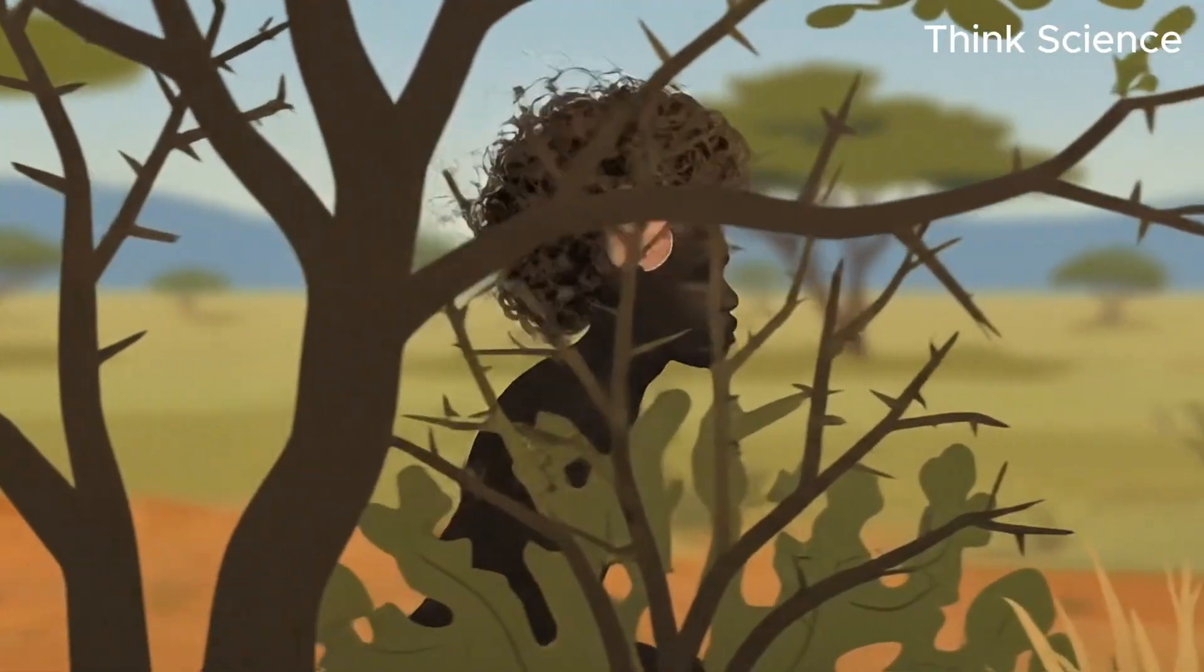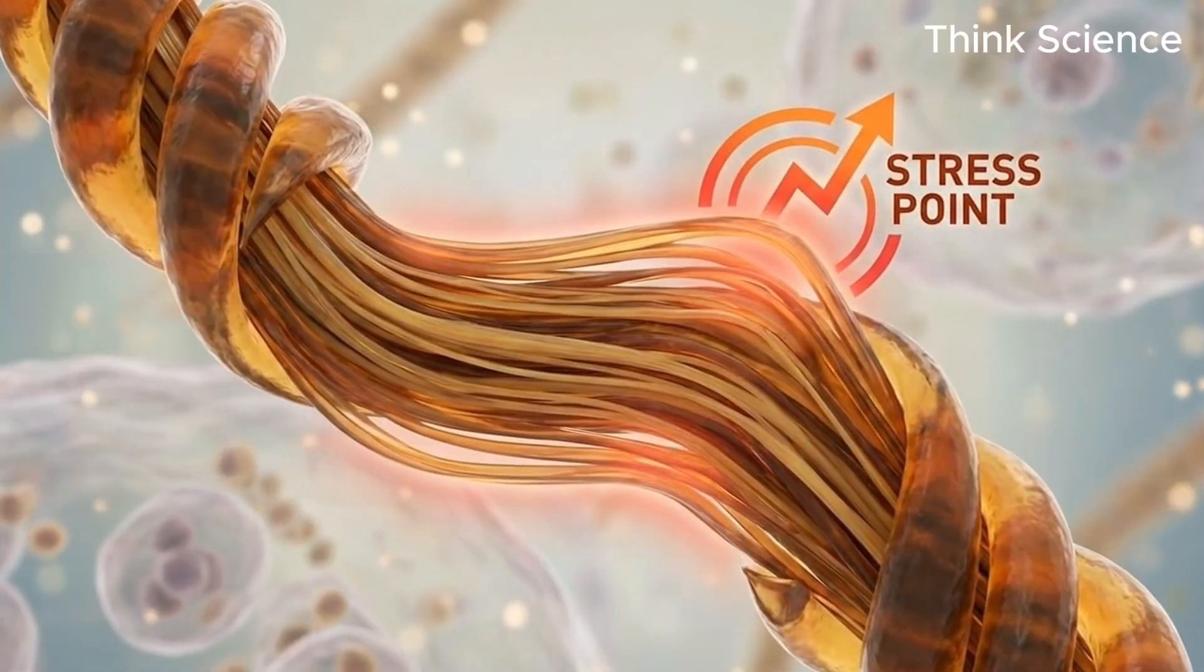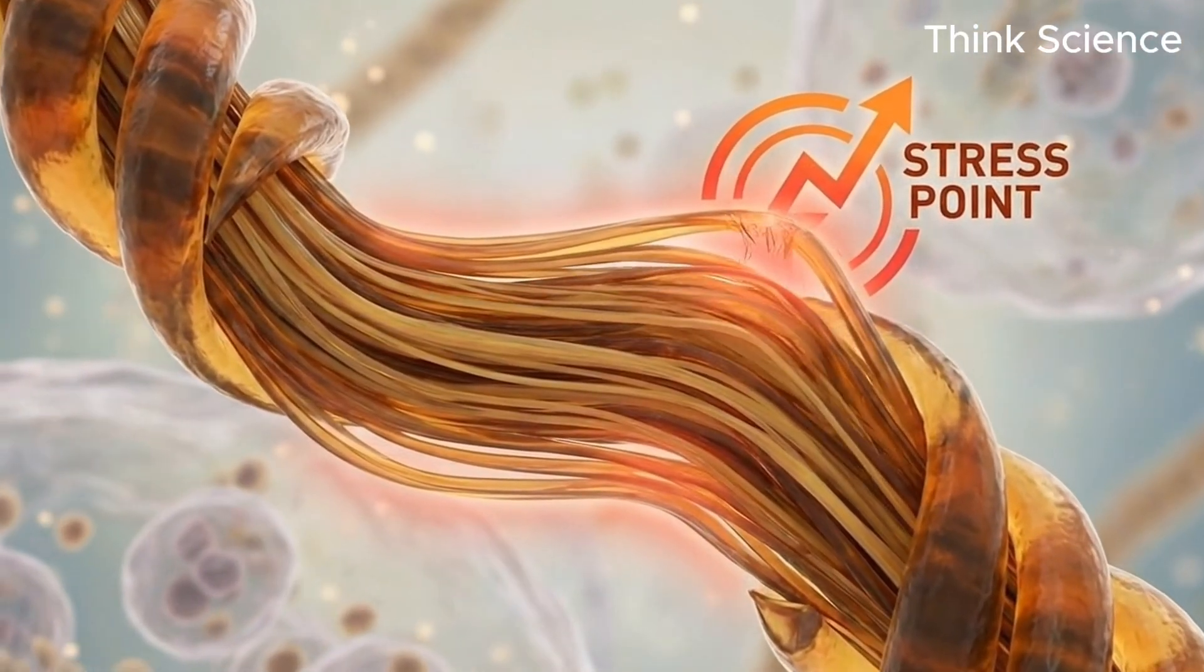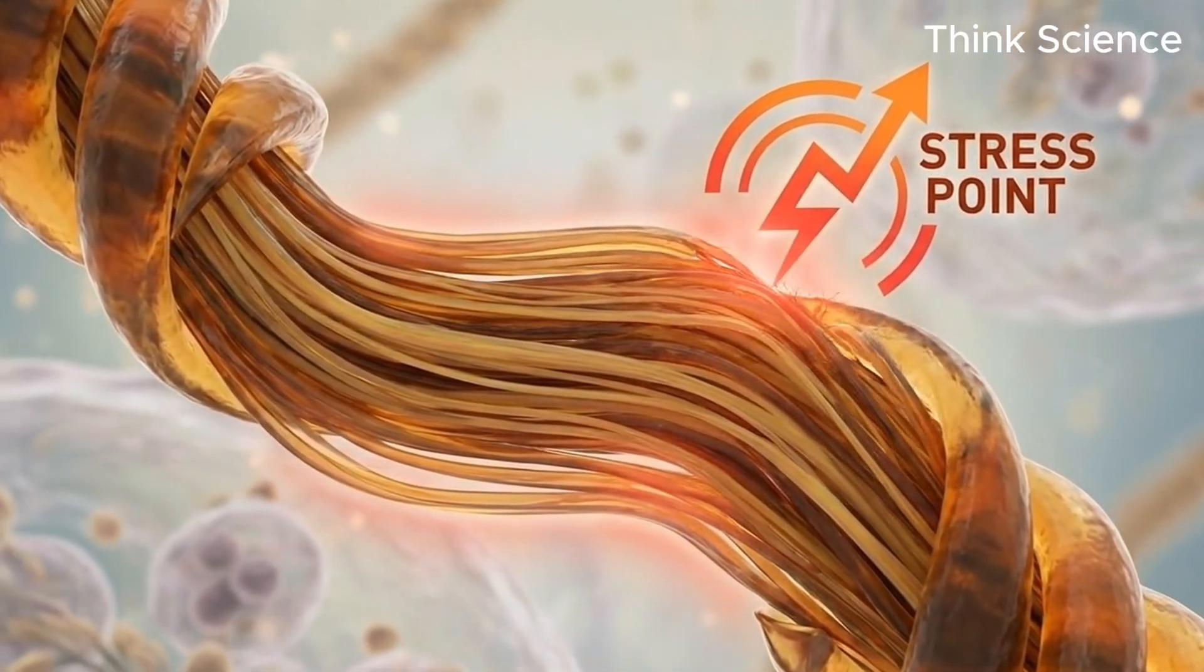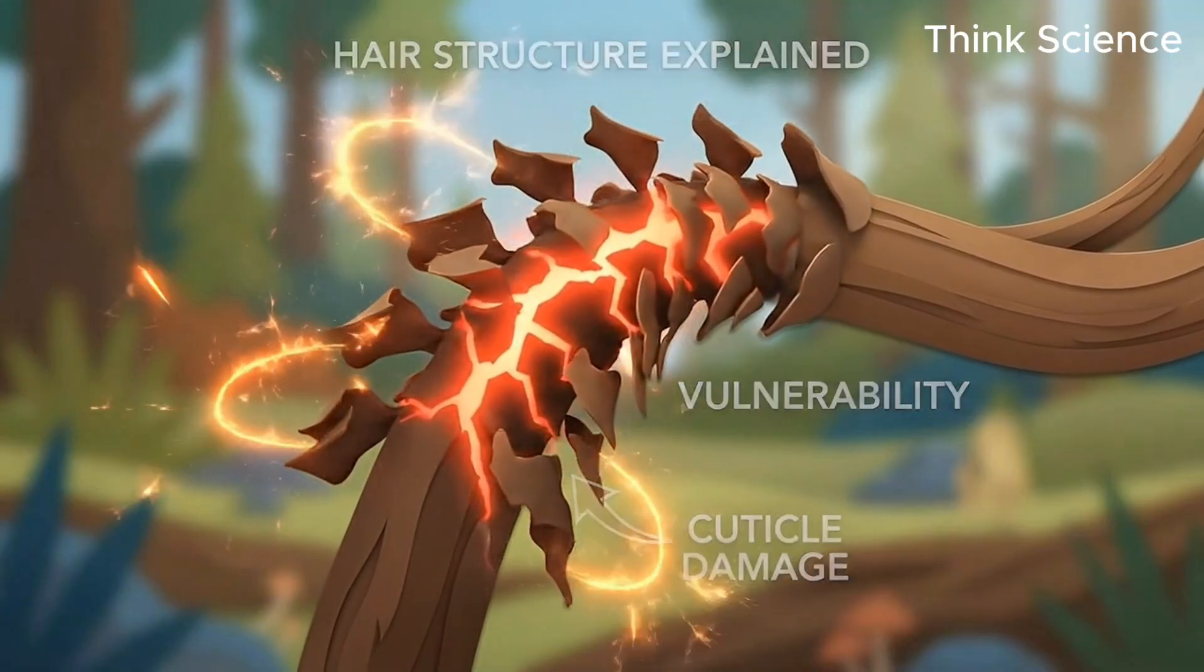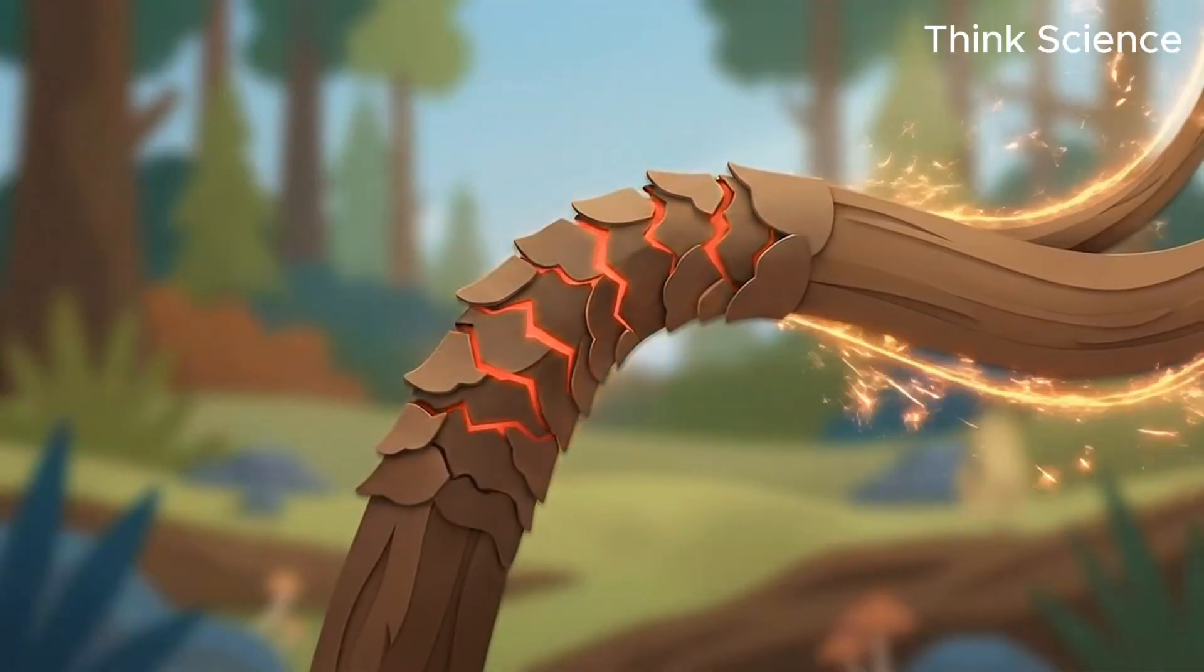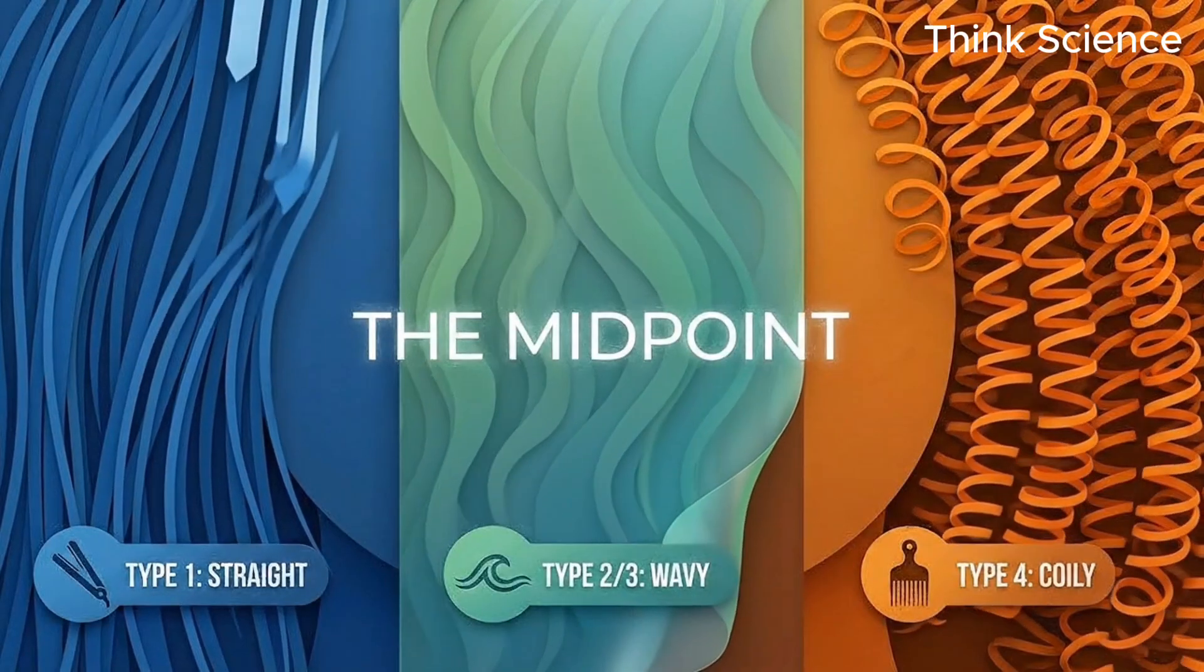This mechanical resilience was vital for preventing scalp abrasion in abrasive environments. However, biologically, coily hair is the most fragile when manipulated. Because every twist in the hair strand represents a point of structural weakness, where the cuticle is slightly lifted. This makes the hair prone to breakage if combed aggressively, yet incredibly strong when resisting compression.